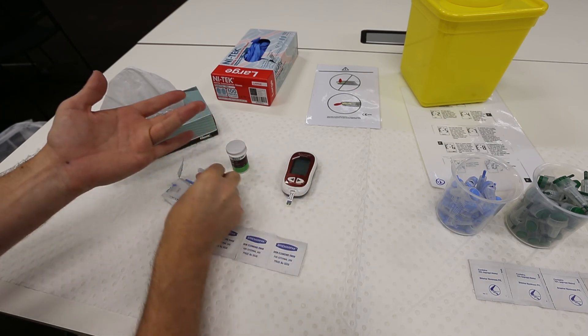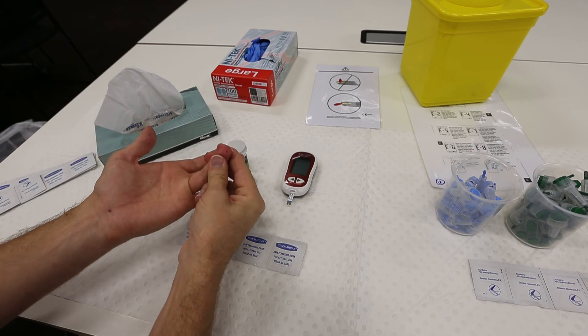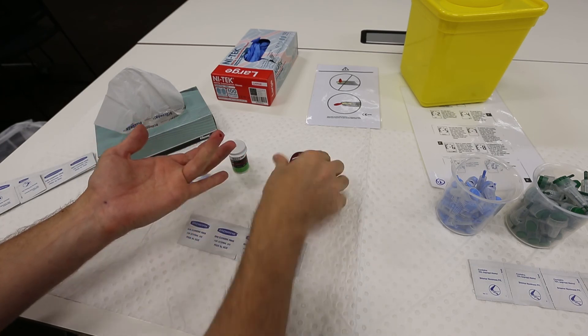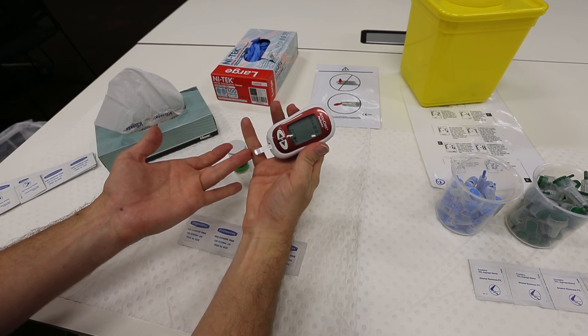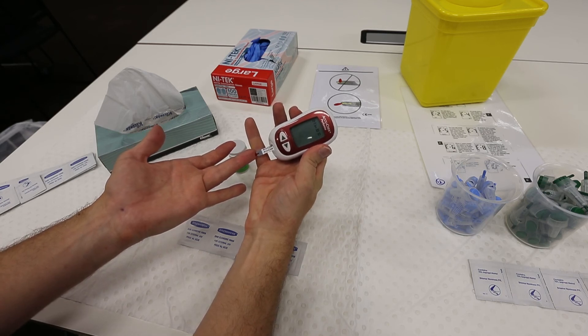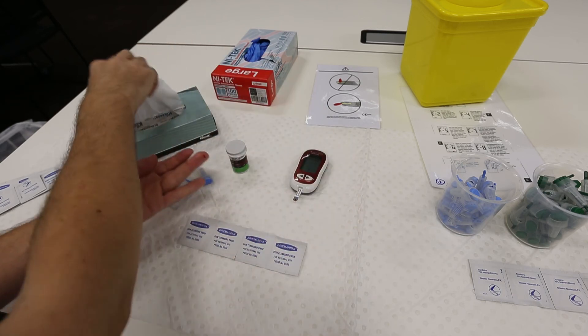You can put the lancet on the table and gently squeeze your finger to encourage a drop of blood to the surface. Next, pick up the glucose test meter and sample your blood as demonstrated earlier.